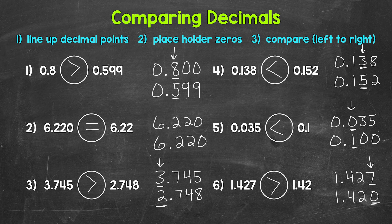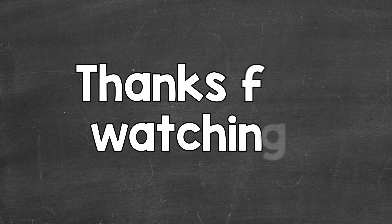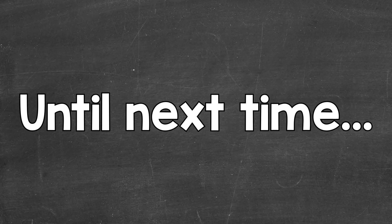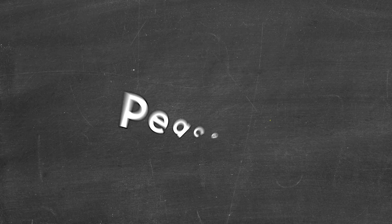There's how to compare decimals. Line up the decimal points. Use placeholder zeros if need be. And then compare digits working from left to right, starting at the greatest place value and working right. I hope that helped. Thanks so much for watching. Until next time, peace.